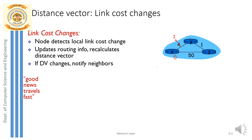At time t=0, y detects that the cost has reduced from 4 to 1. This information has to be updated at node y's table. The distance vector of node y calculated to reach x is equal to 1, which is updated in its table.